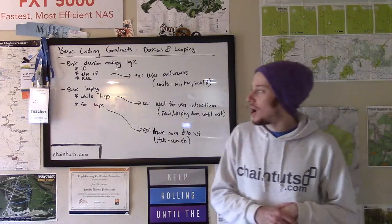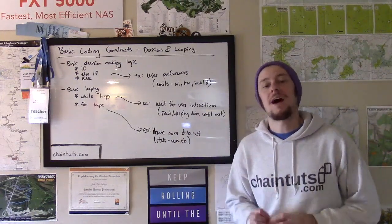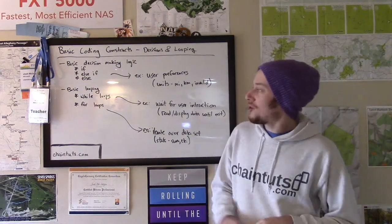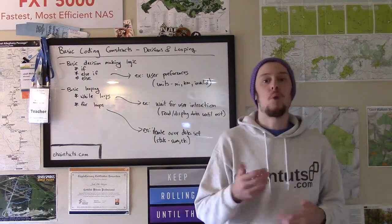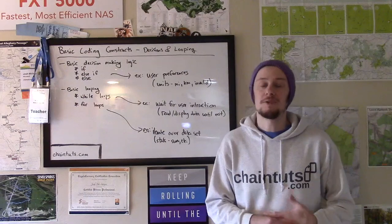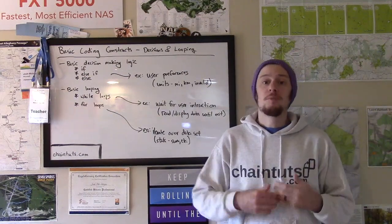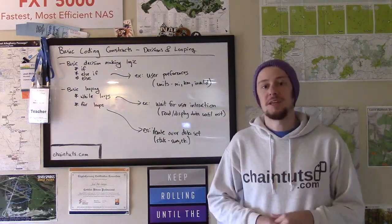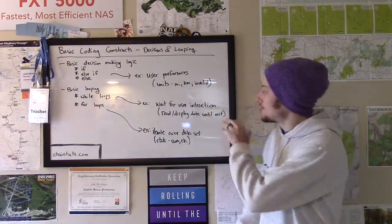So we're also going to talk about two sort of broad categories of loops in our basic programming logic tutorial today. The first is what we would call a while loop or a do while loop. There's different variations of this that are implemented in different programming languages. But this basically says the computer is going to repeat tasks until some condition is met that breaks from the loop.